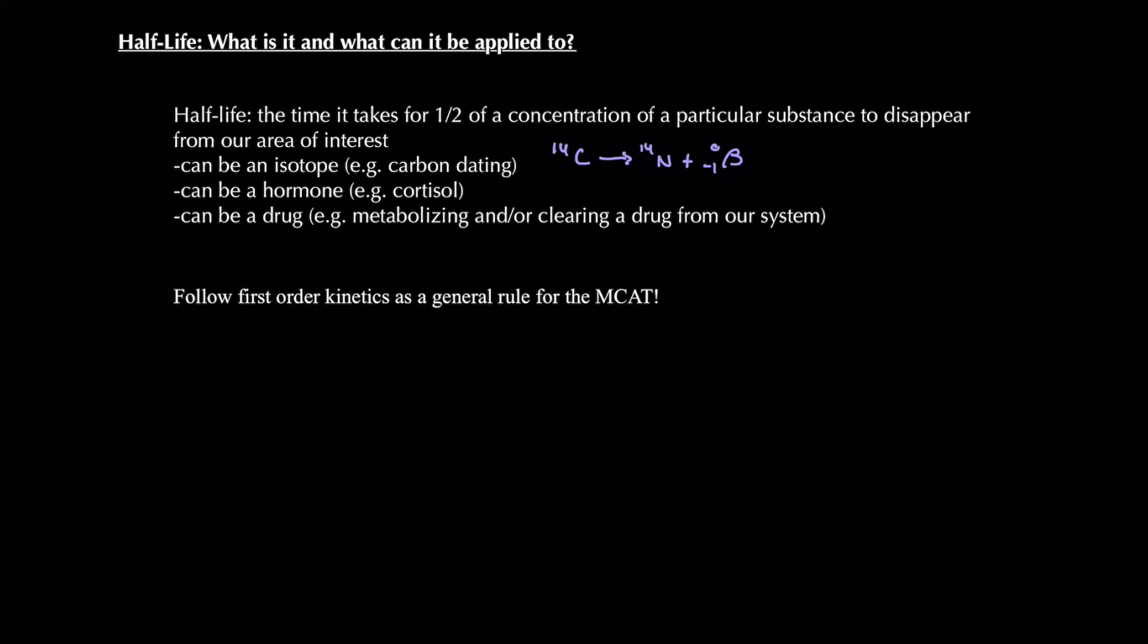Next, it can also be a hormone. So this is a little bit less intuitive, and something you don't think about as much. But hormone concentrations circulate in our blood. So for example, a steroid hormone like cortisol, being a steroid hormone, has a particularly long half-life, and takes a little bit longer to drop in concentration in our blood. So a half-life of cortisol is the time it takes for half of our original concentration of cortisol to exit the blood.